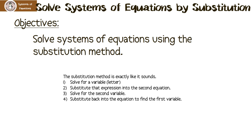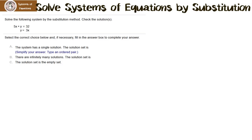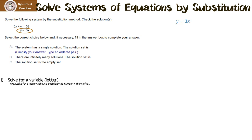Let me show you how to do it. Solve the following system by the substitution method. Check the solutions. The first thing we have to do is solve for a letter — we want to get y by itself or x by itself. In this case, we're super lucky because we have y equals 3x, so we've already solved for a variable.